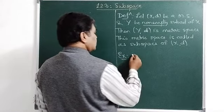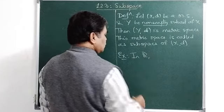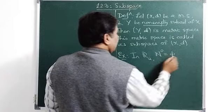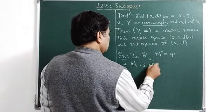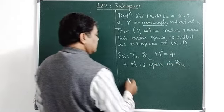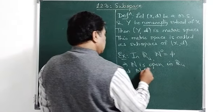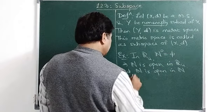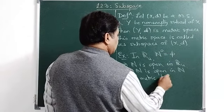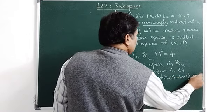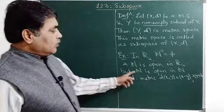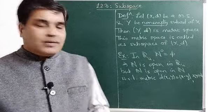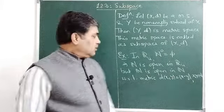See this example: N (the natural numbers) is not open in R with the usual metric — the interior of N is empty, which implies N is not open in R(usual). But N is open in (N, D) where D(x, y) = |x - y| for x, y belonging to N, because every metric space is open in itself. So N must be open in (N, D), even though N is not open in R(usual).